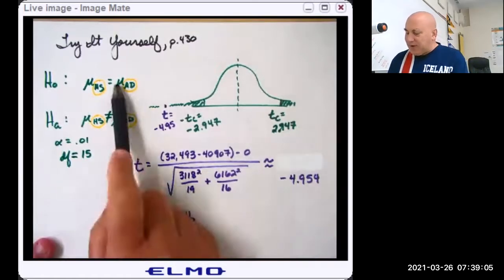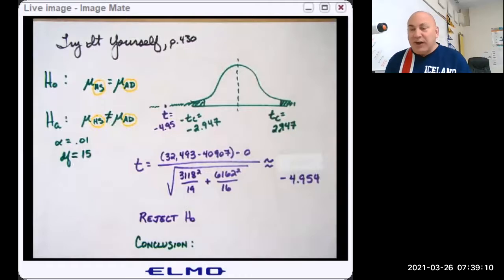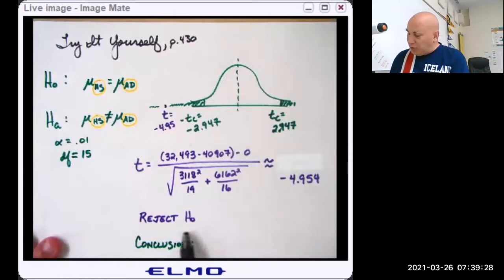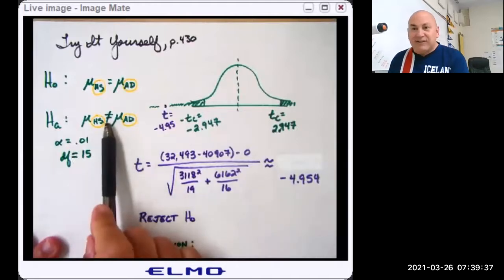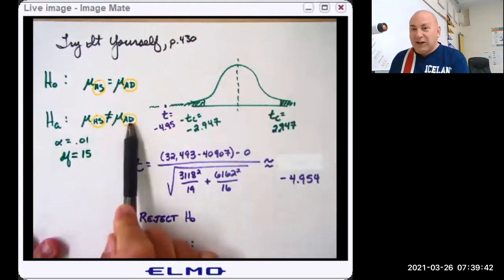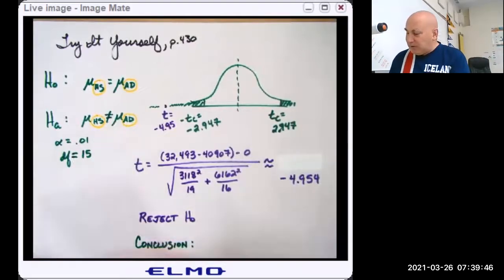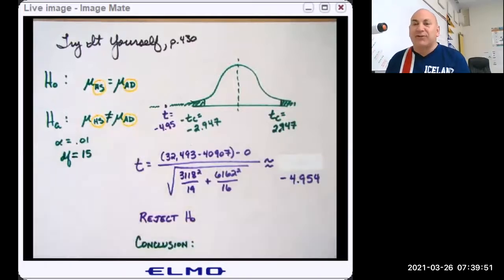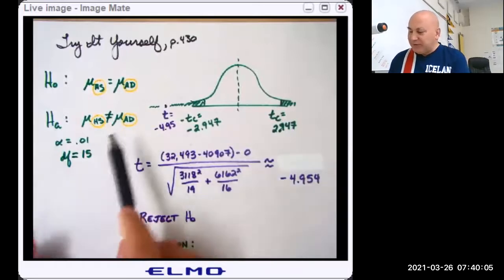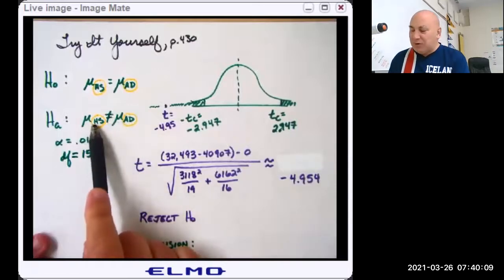We reject the null hypothesis at the 1% level. There is sufficient evidence to show that there is a difference in the average pay between high school diploma holders and associate degree holders. We cannot say that associate degree holders make more, because that was not our hypothesis — we just wanted to show there was a difference. If we want to show associate degree holders make more, the right approach would be to gather data and frame a new hypothesis: mu of associate degree is greater than mu of high school.